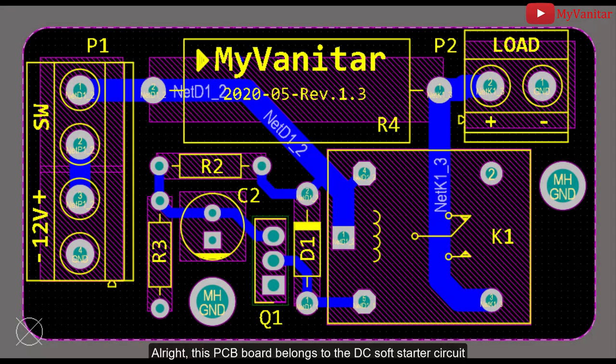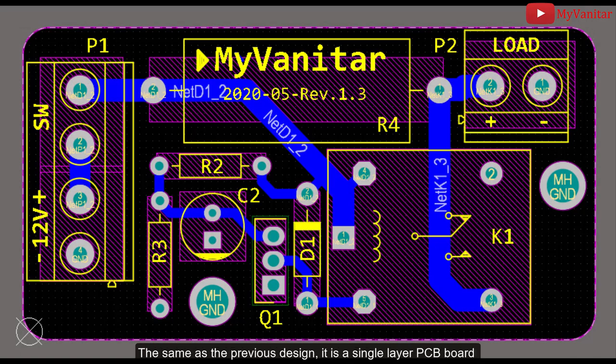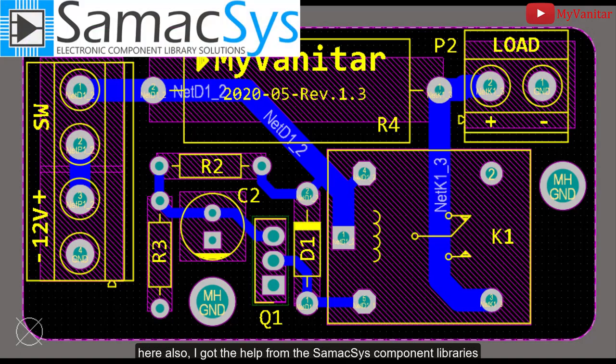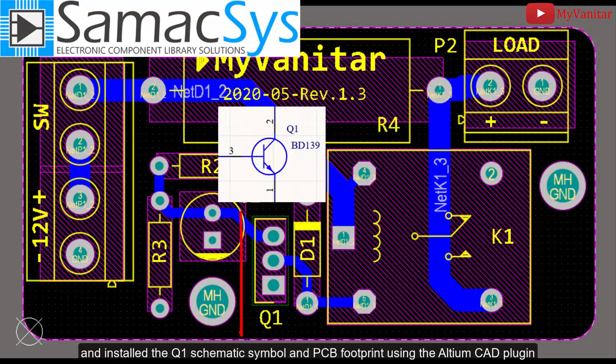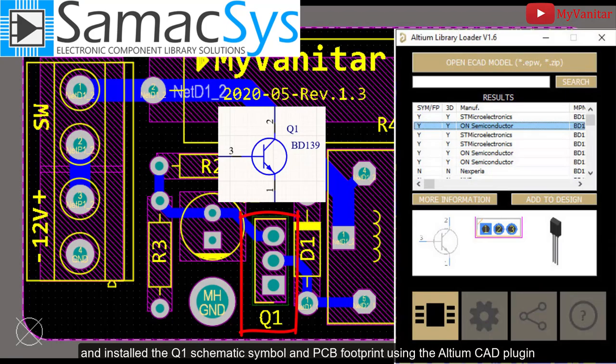All right, all right. This PCB board belongs to the DC soft starter circuit. The same as the previous design, it is a single layer PCB board. All component packages are DIP and pretty easy to build. Here also, I got the help from the SamacSys component libraries and installed the Q1 schematic symbol and PCB footprint using the Altium